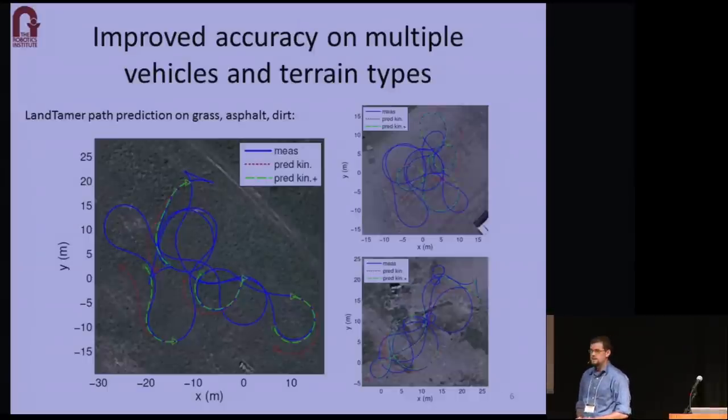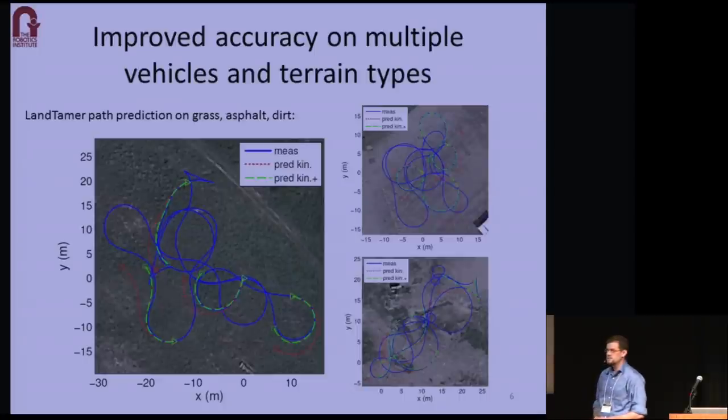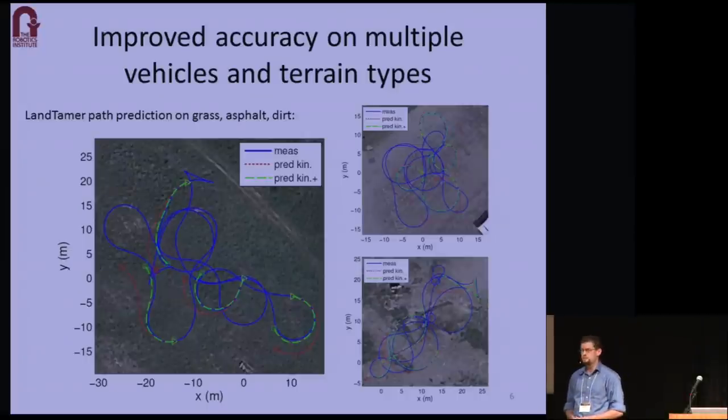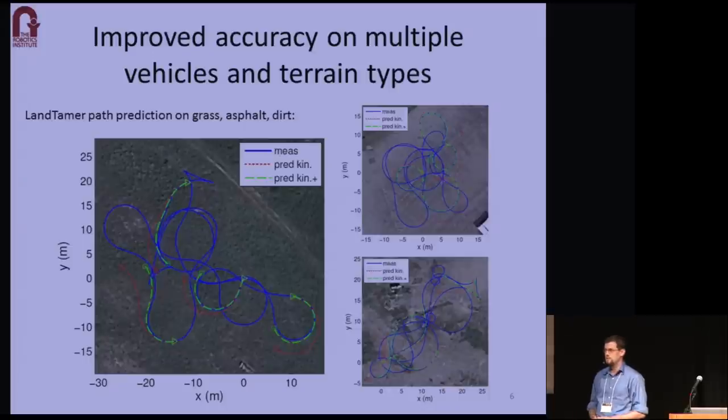We've evaluated our methods on a number of vehicles and terrain types. Here are some results for a skid-steered vehicle driving on grass, asphalt, and dirt. And the blue lines represent GPS ground truth. We also show 20-meter predicted path segments. The red path segments are predicted using a conventional kinematic model. And the green path segments are predicted using our calibrated enhanced kinematic model. And by accounting for slip, we reduce the prediction errors by 50 to 90%. So in the paper, we describe developing these enhanced kinematic models, which in practice can be just as accurate as full dynamic models, but up to five times computationally faster.